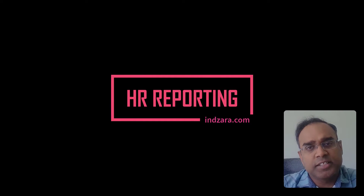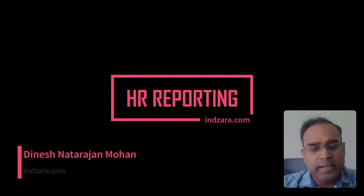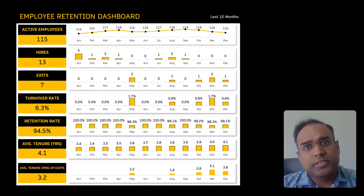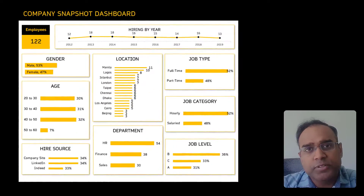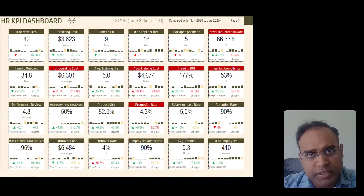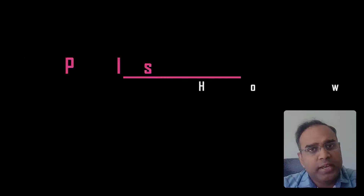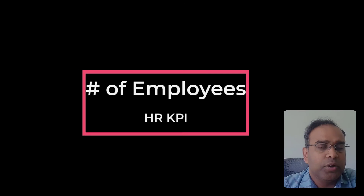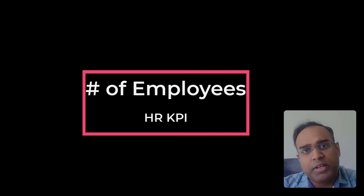HR reporting and analysis is mostly based on data around employees. I have published several templates and spreadsheets about HR metrics, KPIs, and dashboards. In this video series, I want to take each HR metric or KPI and explain how to calculate them in Excel using formulas. We'll start with the most basic one: how many employees are there in our company? This video will be a step-by-step tutorial on how to calculate that using formulas in Excel.